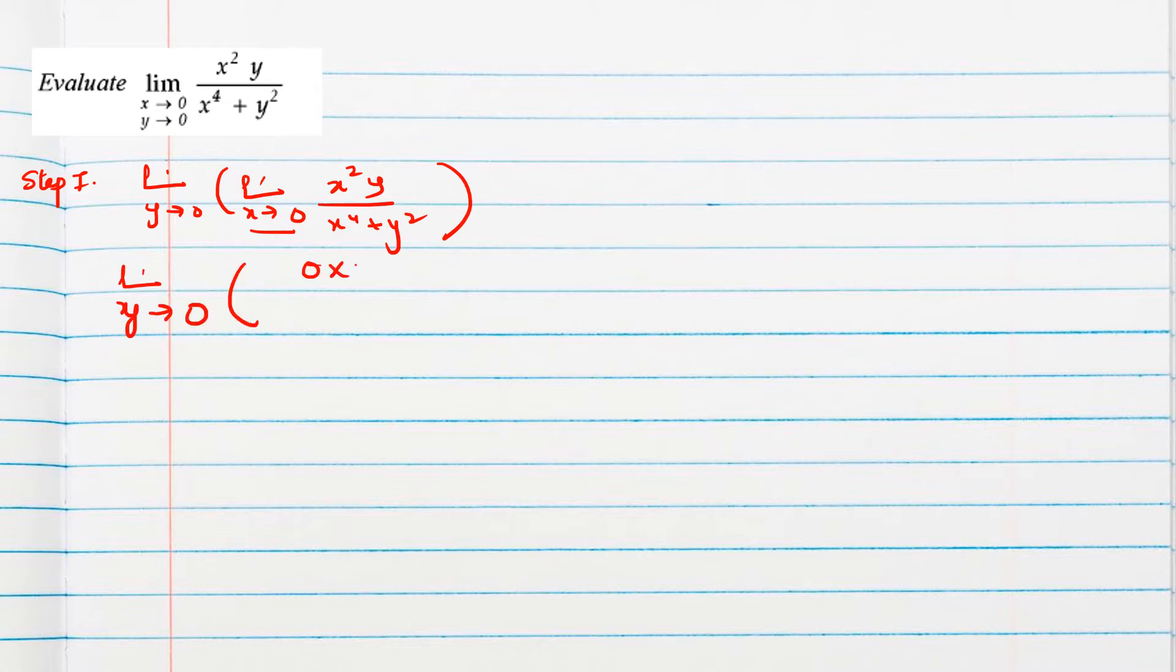So we will get 0 into y, which is 0, plus y square. So 0 divided by anything means 0 only. We will get final answer 0. Suppose this is f1. Step 2 is we will consider x as constant and we will find limit y tends to 0.